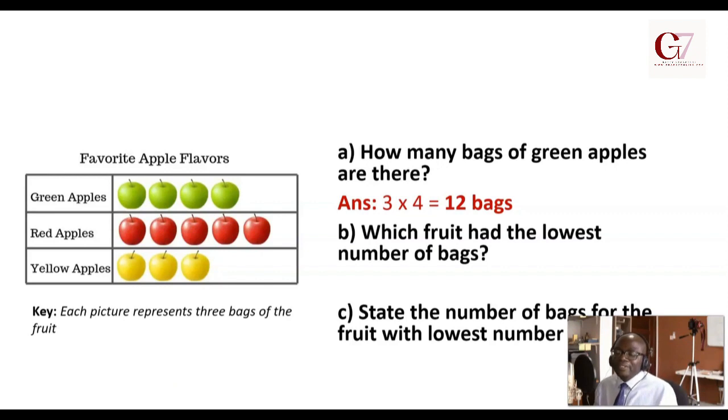So let us look at the second question. Which fruit had the lowest number of bags? Just by a simple eye inspection, I can see that yellow apples are very few. Green apples are represented by one, two, three, four pictures. Red apples: one, two, three, four, five. Yellow apples: one, two, three. So yellow apples have the lowest number. Yes, we're right. Yellow apples.